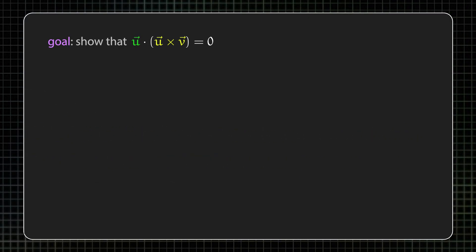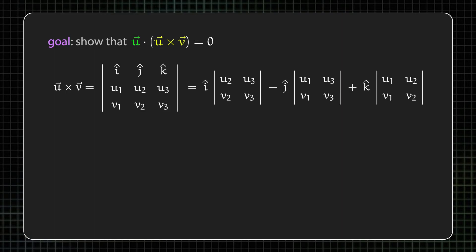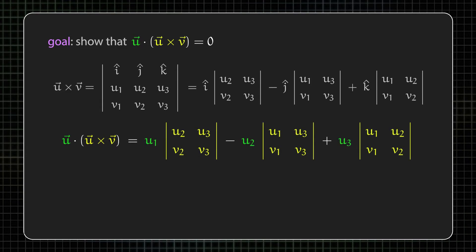If we bring back the determinant formulation of the cross product, then expanding u dot (u cross v) gives us this expression, and that's the same as this determinant.